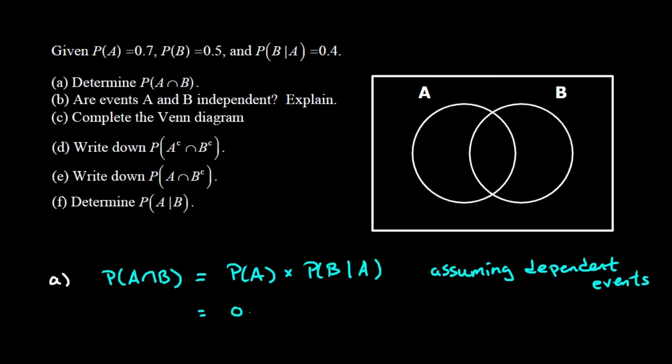We know the probability of A is 0.7 and the probability of B given that A occurs is not 0.5 anymore — it drops down to 0.4. Noticing that B was originally 0.5 but is now different means A must have had some effect on B, which is further evidence we're on the right track by assuming dependence. The product of 0.7 and 0.4 is 0.28.